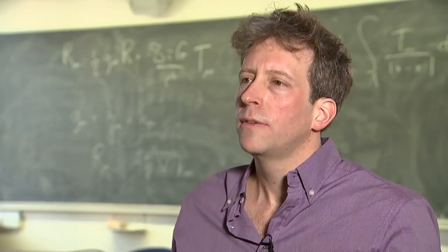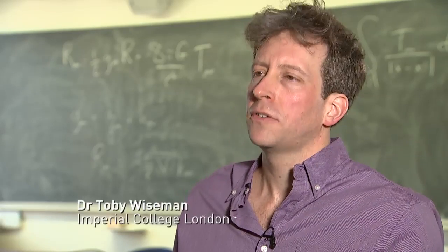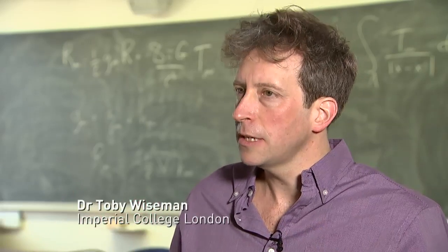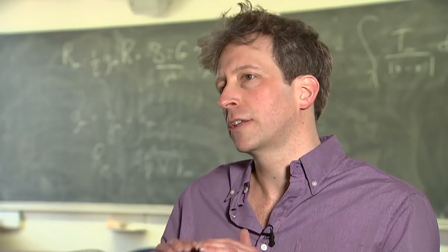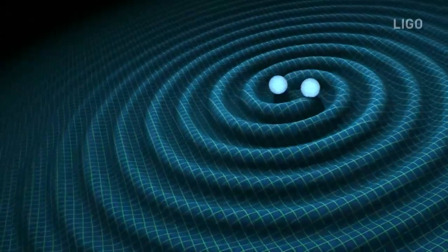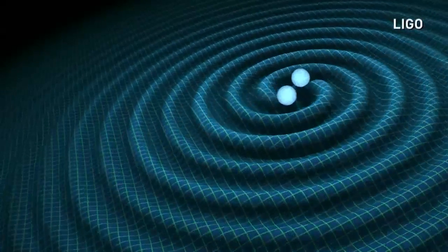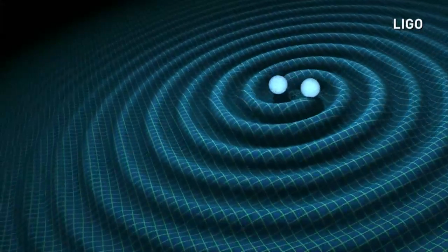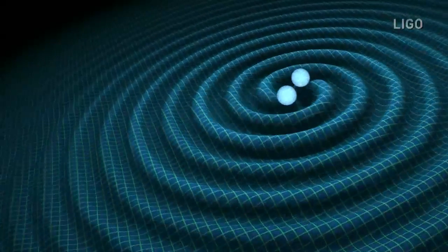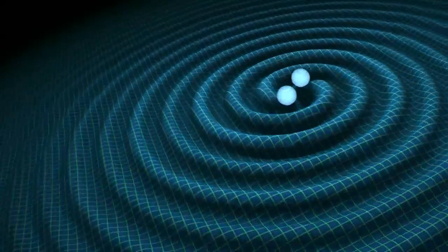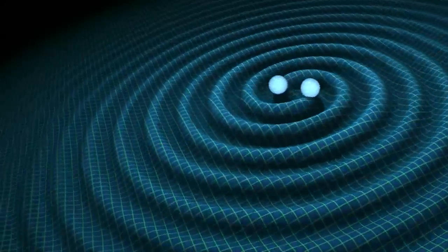A gravitational wave is a ripple in space and time. Einstein told us that space and time respond to matter within it, and just like the surface of a pond — if you put your finger into a pond and move it, you create water waves. The same thing happens as mass moves through space-time: it creates ripples. Those are the gravitational waves.